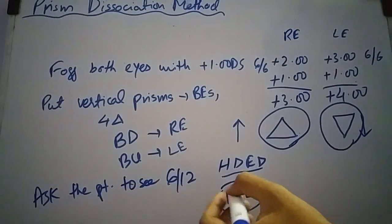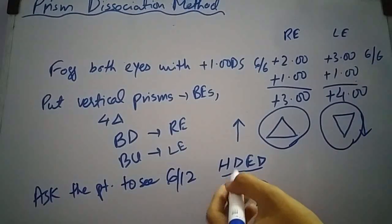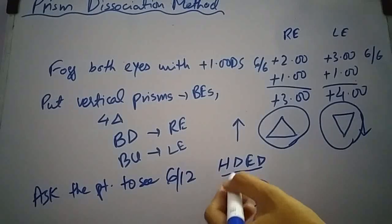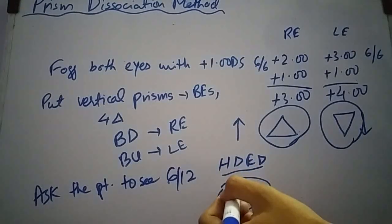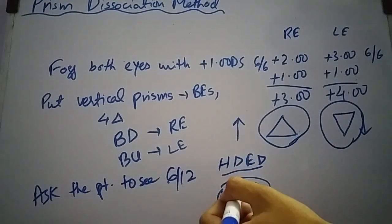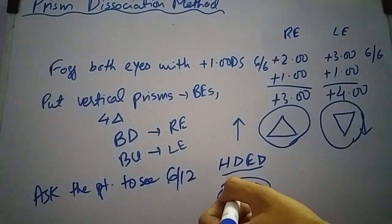Now you will ask the patient which line is clear, upward or downward. If the patient says that both lines are equally clear it means that eyes are in perfect state of binocular balance.